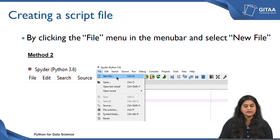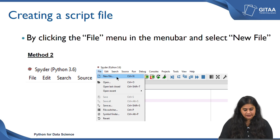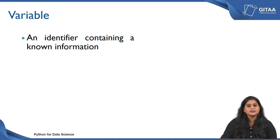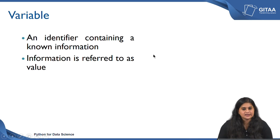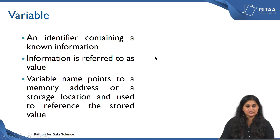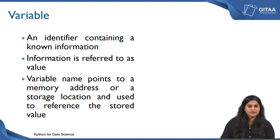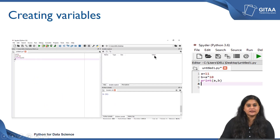Till now we have set the working directory and created a script file. Before we save our script file, let us look at what a variable means. A variable is an identifier that contains a known piece of information. The known information contained within an identifier is referred to as a value. A variable name will actually point to a memory address or storage location, and this location is used to cross-refer to the stored value. A variable name can be descriptive or can also consist of single alphabets. We will look into the naming conventions for variables in the lectures to come.